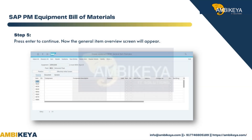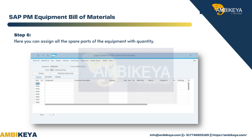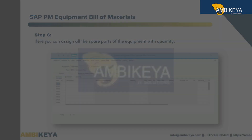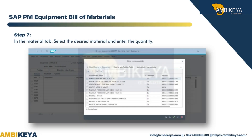Step 5 — Press Enter to continue. The General Item Overview screen will appear. Step 6 — Here you can assign all the spare parts of the equipment with quantity. Step 7 — In the Material tab, select the desired material and enter the quantity.